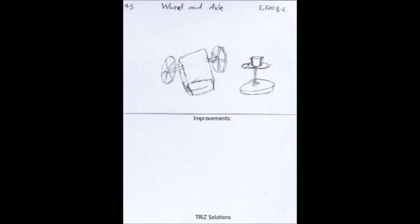The wheel and axle is a simple machine that consists of a circular wheel that rotates around a central axle.